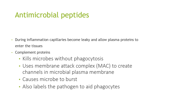During inflammation, capillaries become leaky and allow plasma proteins to enter the tissue. Complement proteins can kill microbes without phagocytosis. They use a membrane attack complex to create channels in microbial plasma membranes, causing the microbe to burst. This also enables pathogens to be more easily targeted by phagocytes.